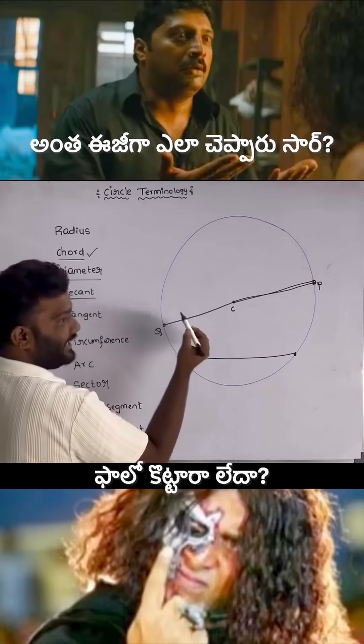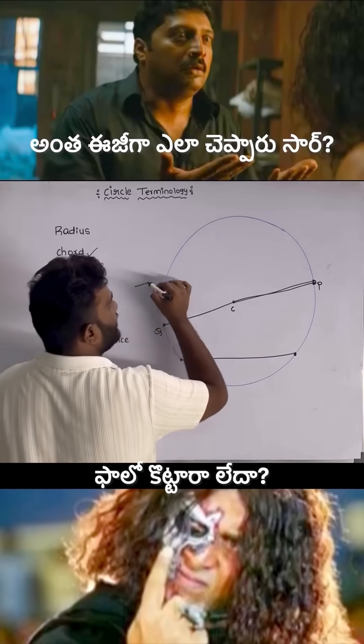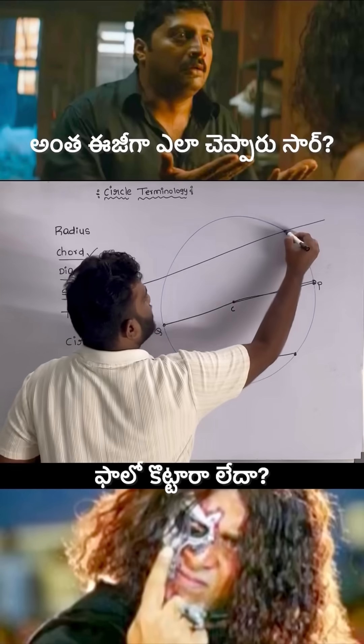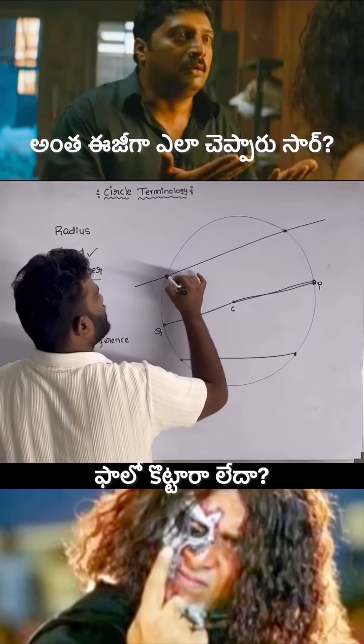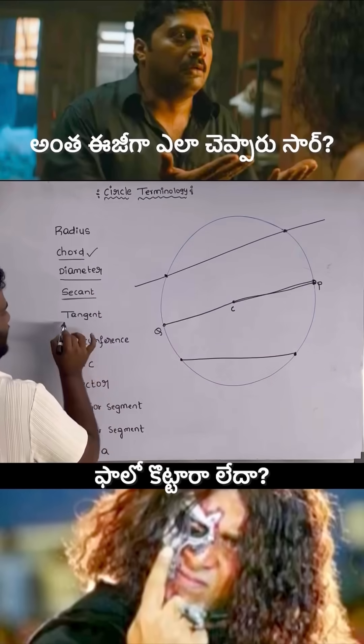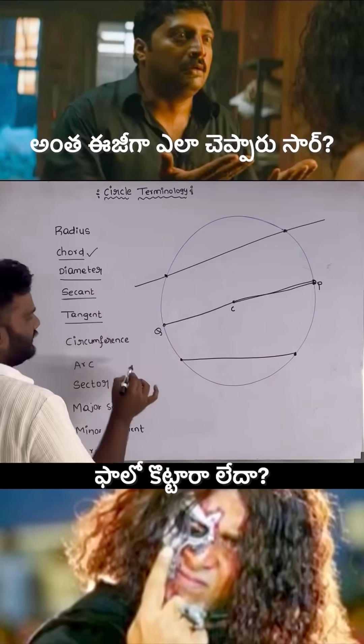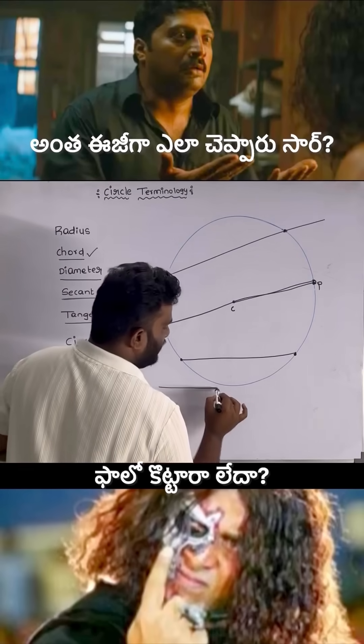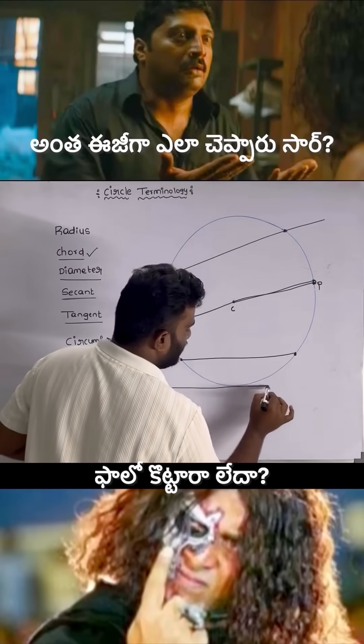Secant: it is a line which intersects the circle at two distinct points. Tangent: a line touching the circle at exactly one point is called a tangent.